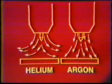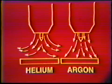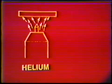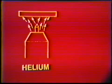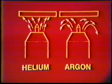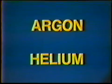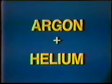Argon is heavier than air, causing it to remain in the arc area when the puddle is below the nozzle. This makes it necessary to double the gas flow rate for helium in these positions. Helium is lighter than air, which is ideal for positions such as overhead, which locate the puddle above the gas nozzle. In some cases, the gases are mixed to produce a gas with the desirable features of both.